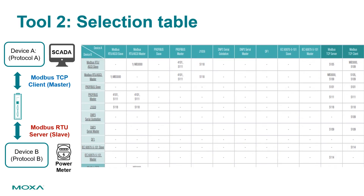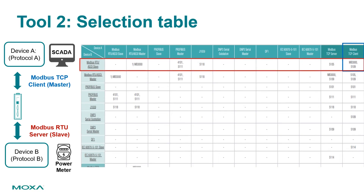When using the offline M-Gate selection table for the same scenario, find Modbus TCP client in the column of device A and Modbus RTU server in the column of device B. Finally, the intersection shows the suitable M-Gate models.